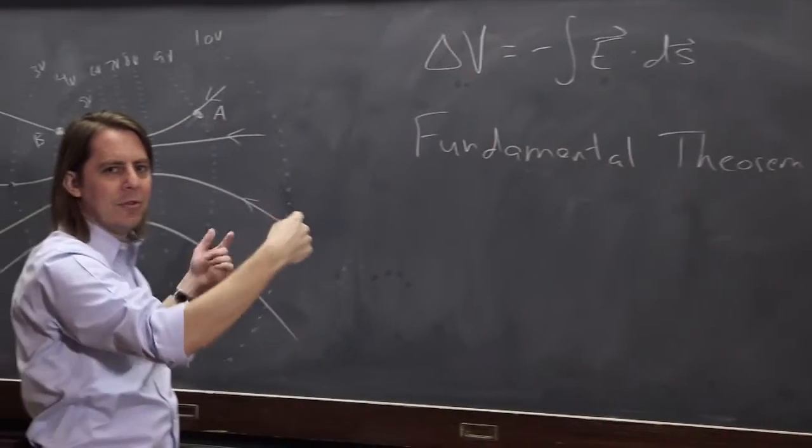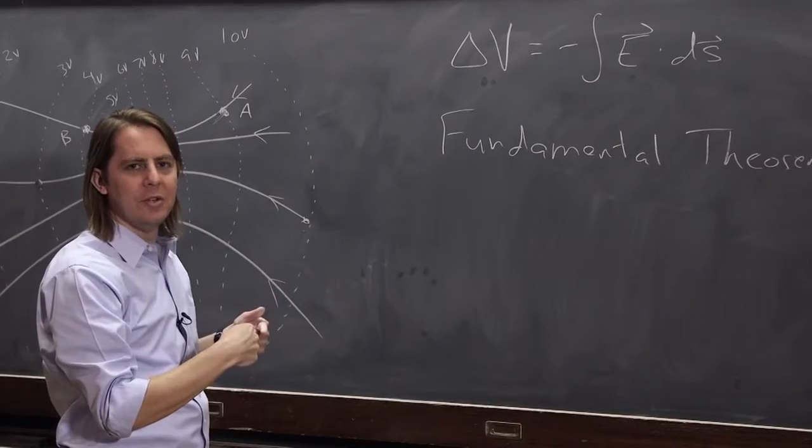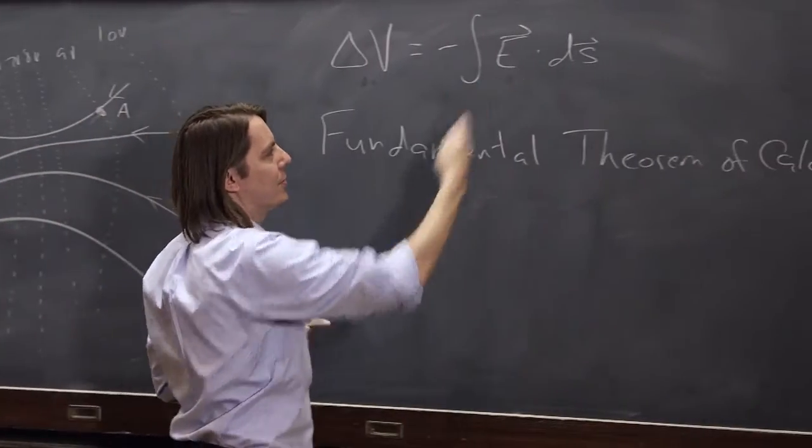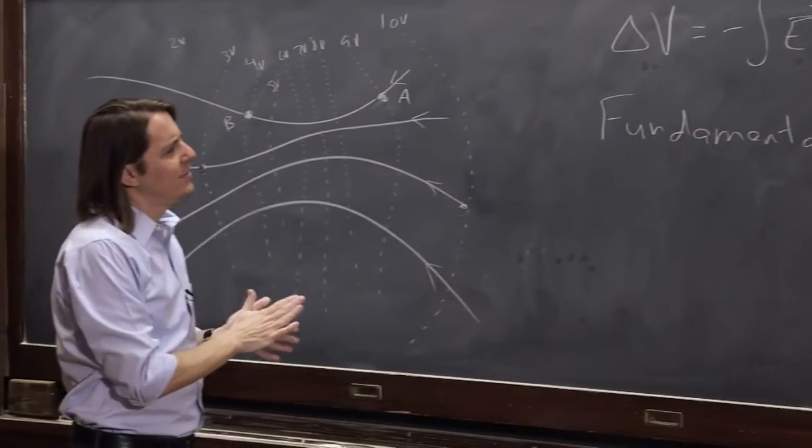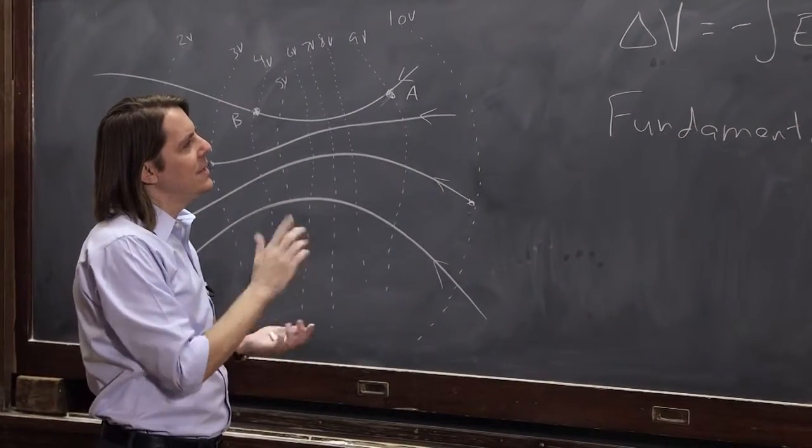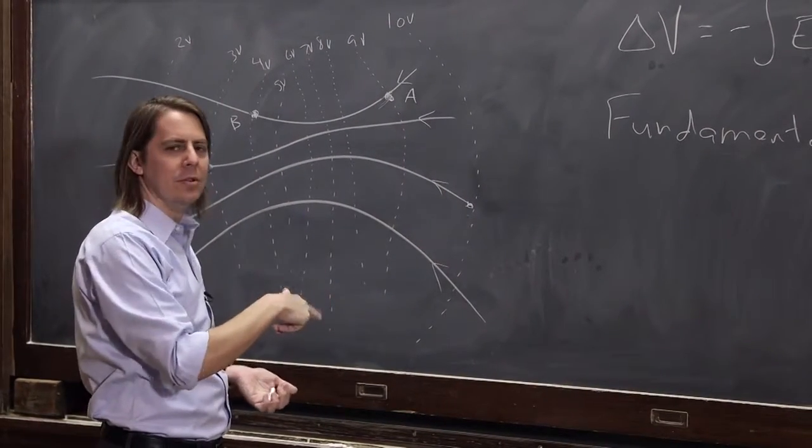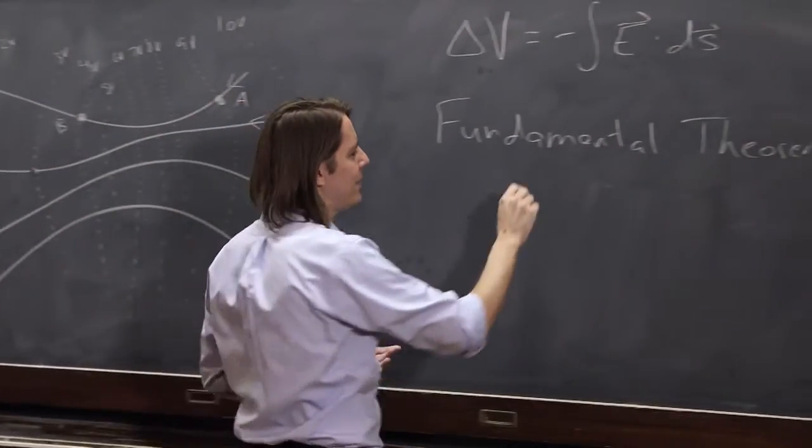Taking an integral, taking a derivative, are like inverse processes of each other. In fact, integrals are sometimes called antiderivatives. So what that tells us is you can get E from the potential. You can get the field from the potential.